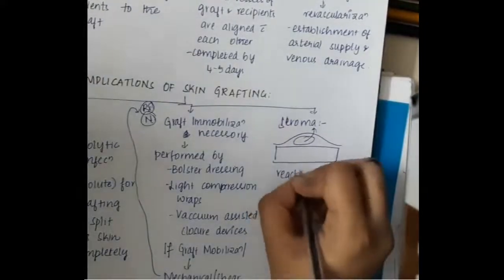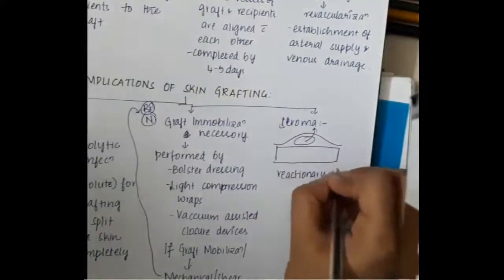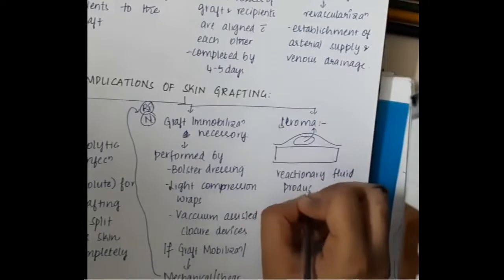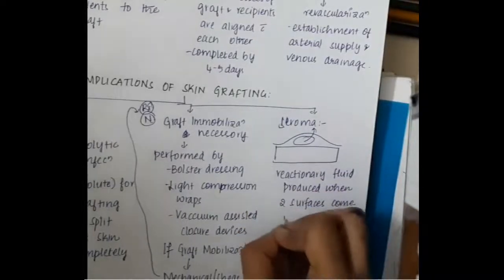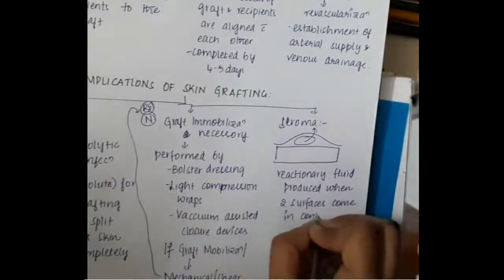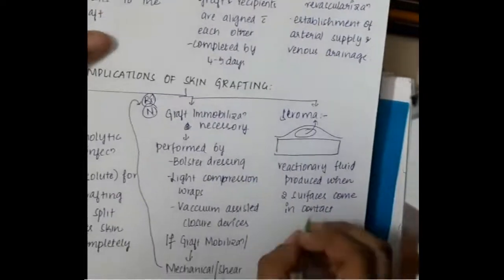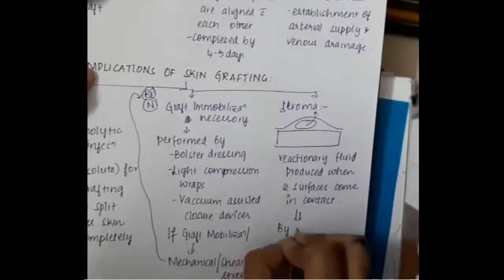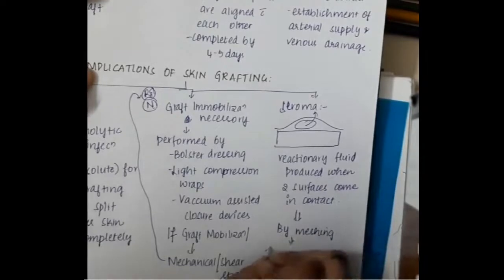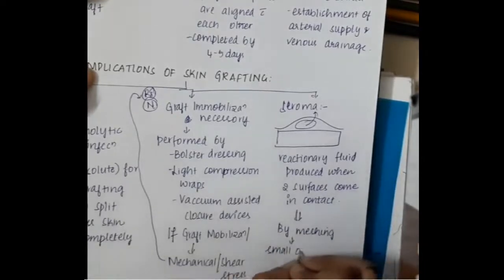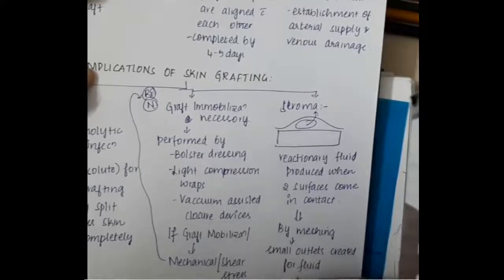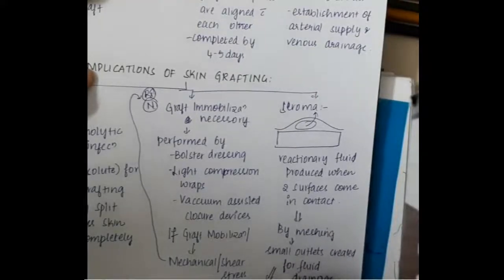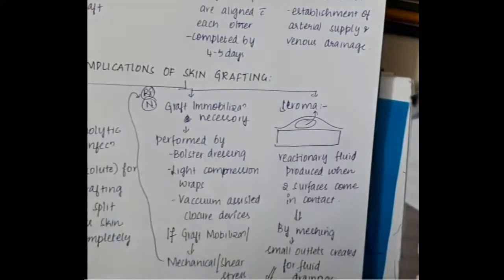The third complication is seroma. Seroma is the reactionary fluid produced when two surfaces come into contact with each other. By meshing — putting small holes on the graft — we primarily increase the surface area, but those small holes also help drain the fluid. This is called pie crusting.